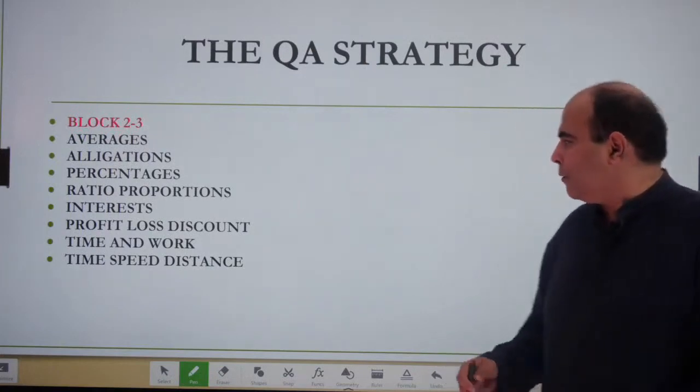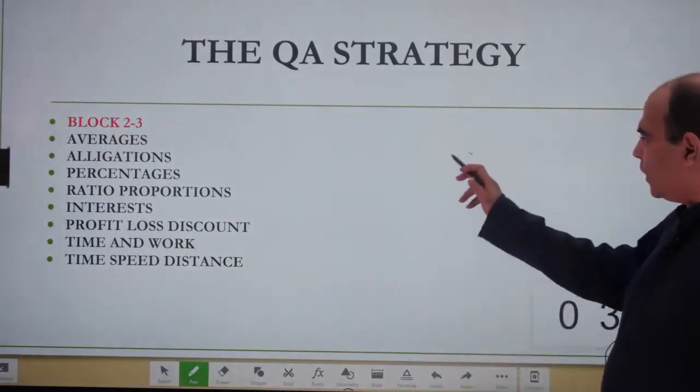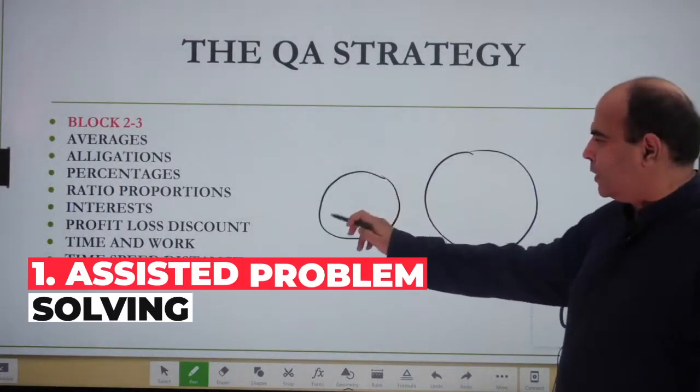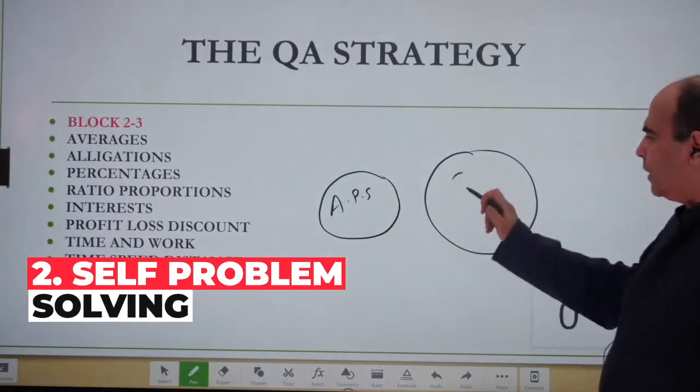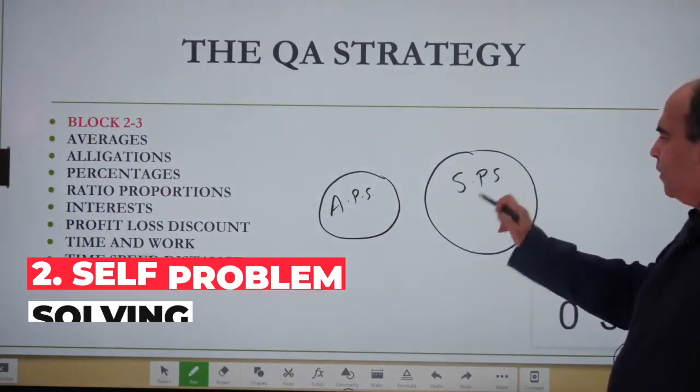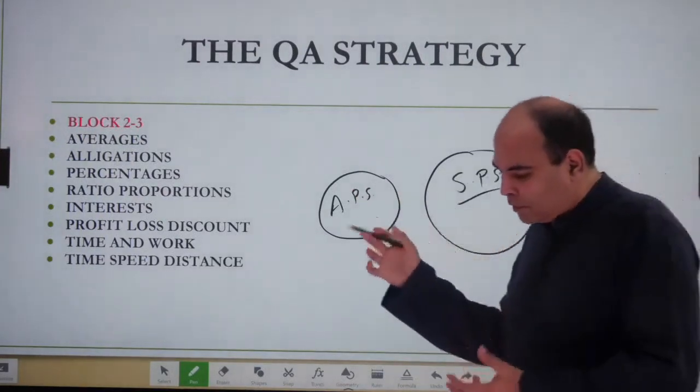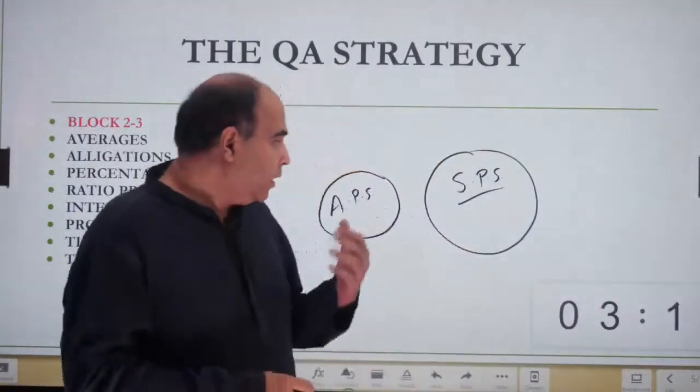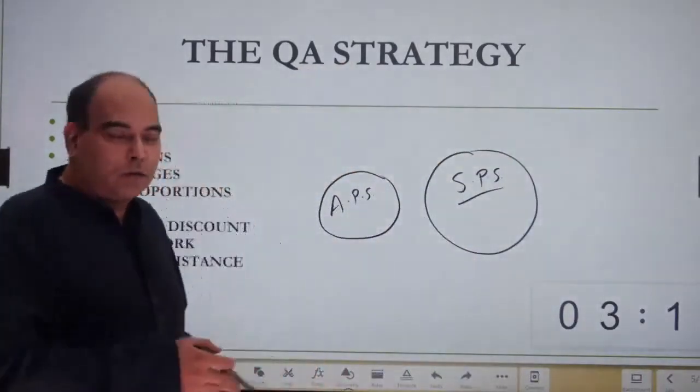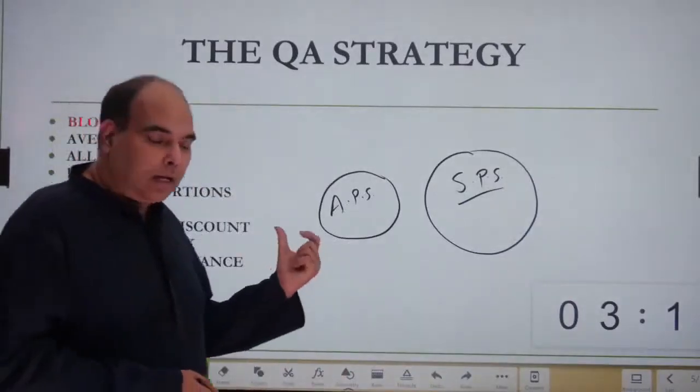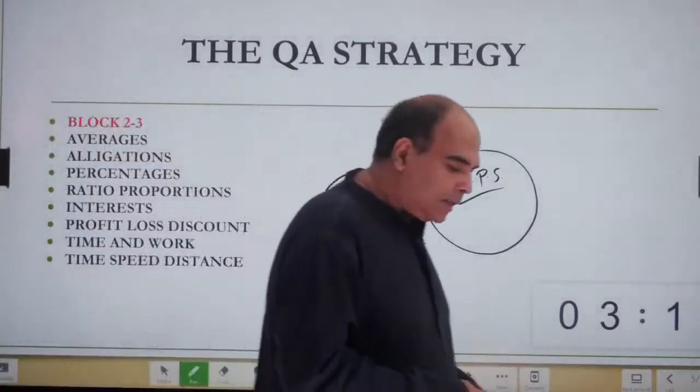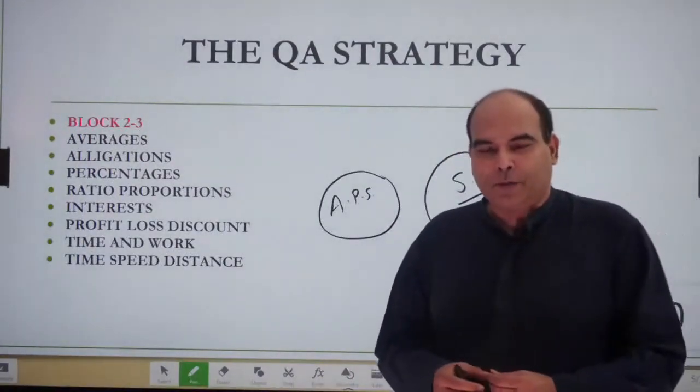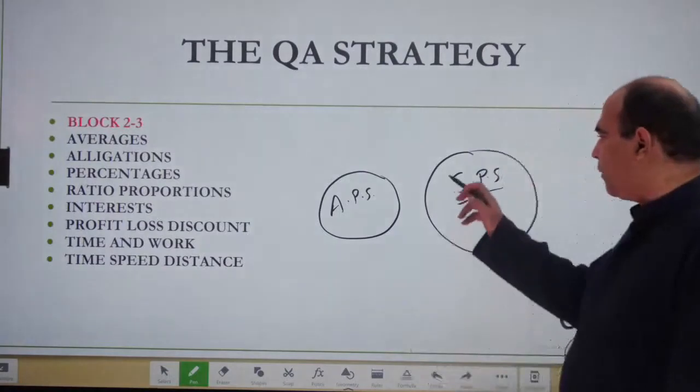One is assisted problem solving and the other is self problem solving. Assisted problem solving is when you're studying from somewhere—either on a YouTube channel or in a course like Mind Works—where teachers teach you. That's an assisted problem solving process where you get a question through with assistance, but then there's a second part which is self problem solving.